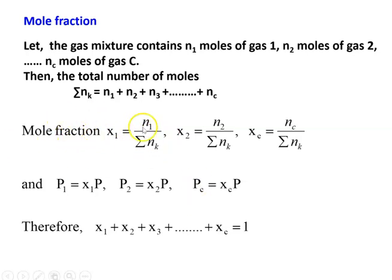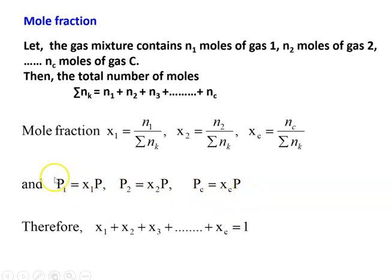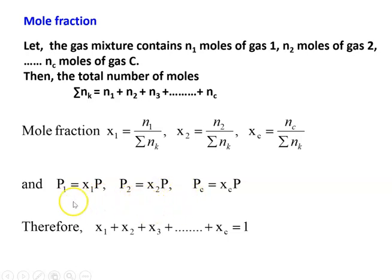The mole fractions are: X1 = N1/N, X2 = N2/N, and Xc = Nc/N. From the definition of partial pressure, substituting for N1 and N, we get P1 = X1·P, P2 = X2·P, and Pc = Xc·P. Adding X1 + X2 + X3 gives 1, since the numerator and denominator are both equal to ΣNk. The total number of moles N = N1 + N2 + N3 — this equation must be remembered.